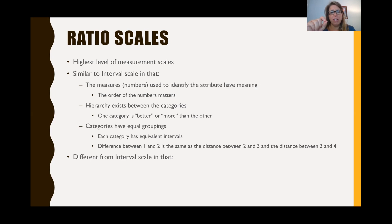Ratio scales are different from interval scales in that they have a zero point. You can have an absence of the attribute. There's a natural zero on the scale where the respondent can choose an absence of the attribute being measured. It's important to note that just because you include zero on your scale, it does not necessarily make it a ratio scale. You must have the measures, the hierarchy, and equal groupings in order to make it a ratio scale along with the zero.